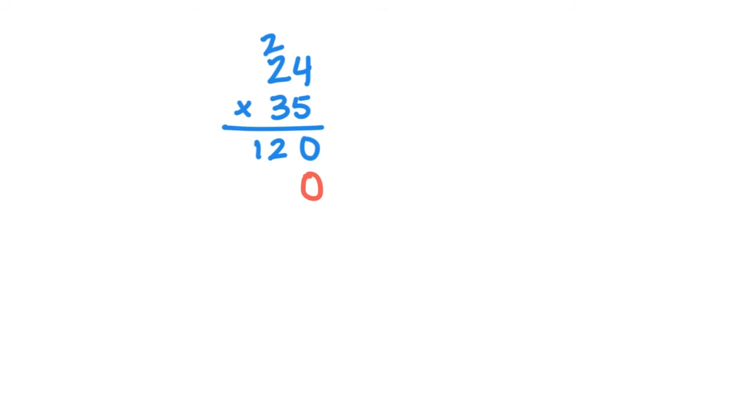Now we can keep going. Next, we would multiply 3 times 4, which is 12. I'm going to put my 2 in my tens place. I don't need this 2 anymore. Now I just need to put the 1 from 12. Now we can do 3 times 2, which is 6, plus 1, which equals 7. Now all we need to do is add. 0 plus 0 is 0, 2 plus 2 is 4, 1 plus 7 is 8. Our answer is 840.